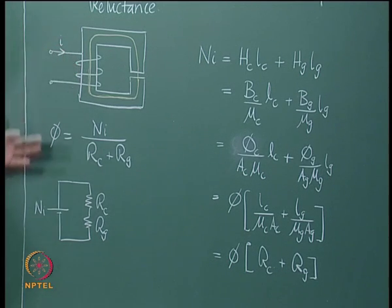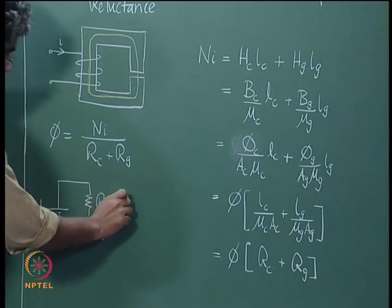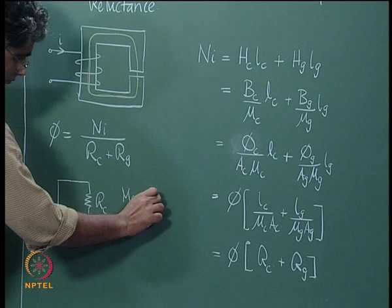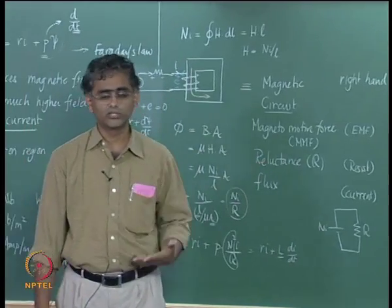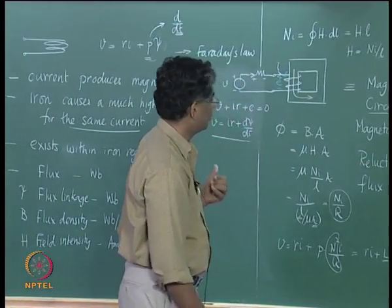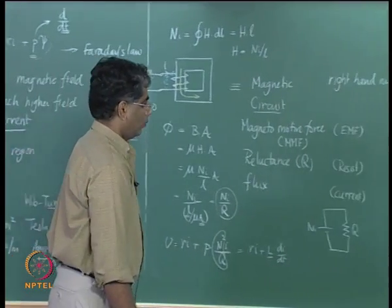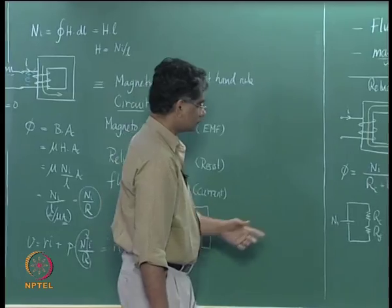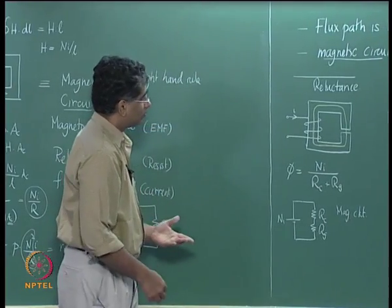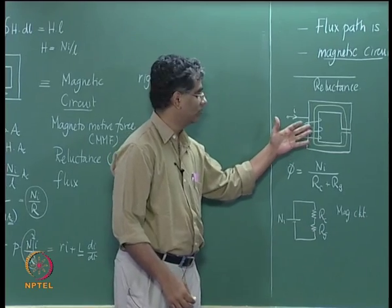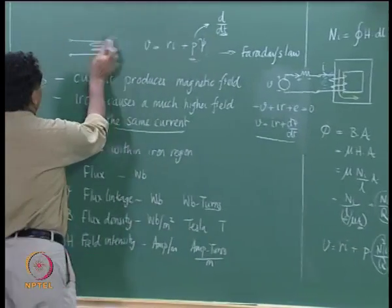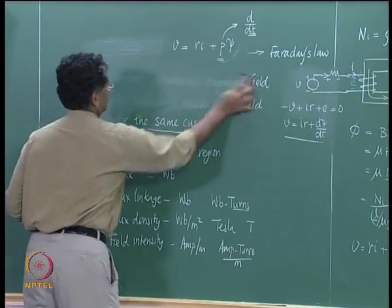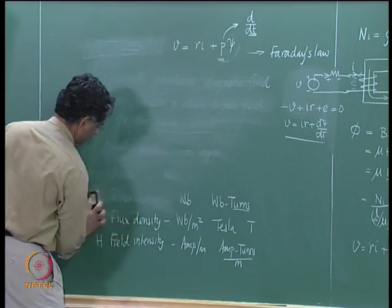In this equivalent magnetic circuit, the MMF N·I is generated and applied across the reluctance of the core Rc and the reluctance of the air gap Rg, both occurring in series in the loop. In this manner, one can reduce a given system with an air gap into an equivalent magnetic circuit. It is important to remember all these expressions because we will be using them again and again when describing various electrical machines.